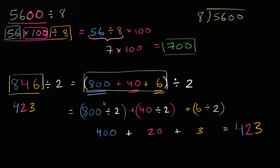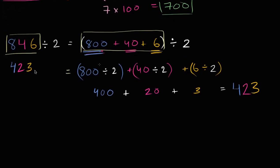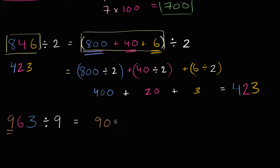Let's do one more, just to really make sure that we are fully enjoying this. So let's say that I have 963 and I want to divide that by 9. You might make the realization: I can see parts of this that I know how to divide by 9. I could say this is the same thing as 900 plus 63, divided by 9.